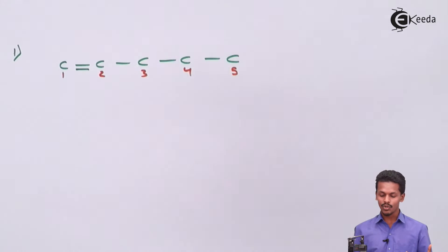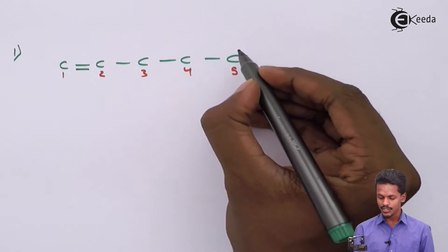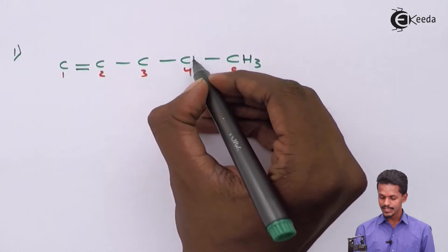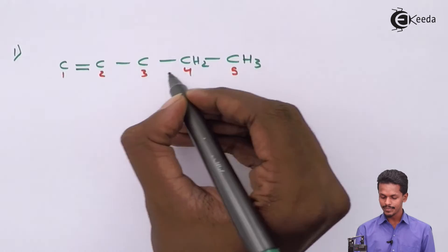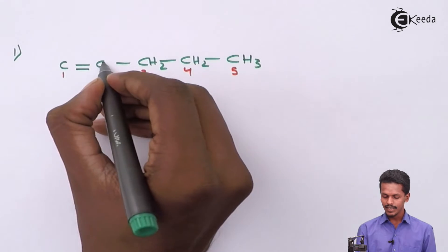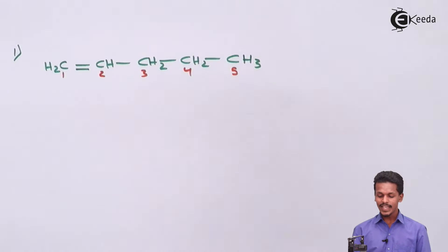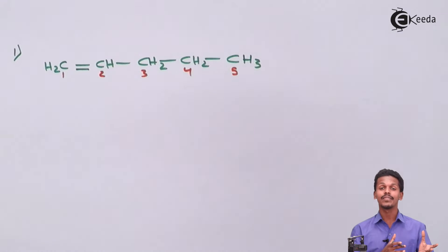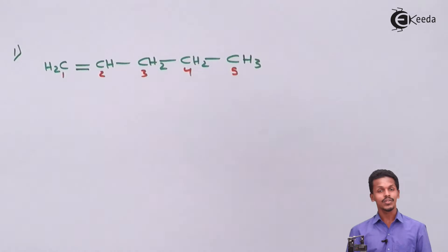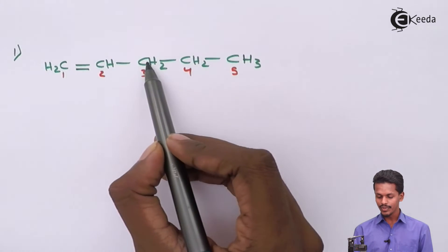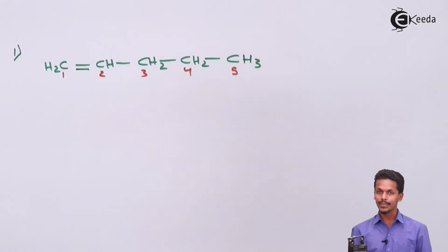This is the first isomer drawn for C5H10. We fill in the hydrogen atoms: H2 on the first carbon, H2 on the second, H on the third, and CH2 on the last. Counting the carbons: one, two, three, four, five — five carbon atoms confirmed.